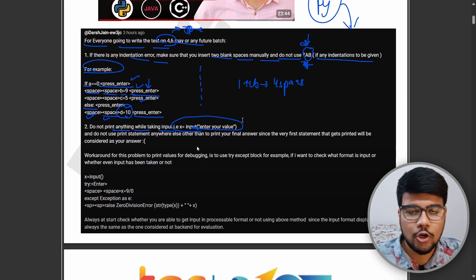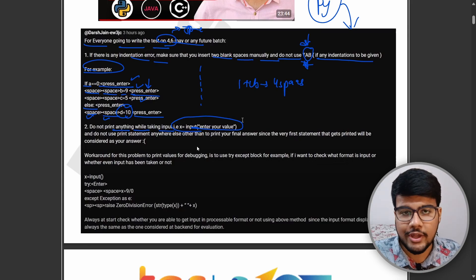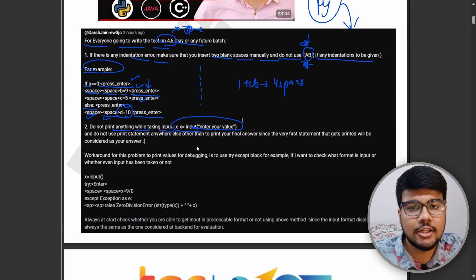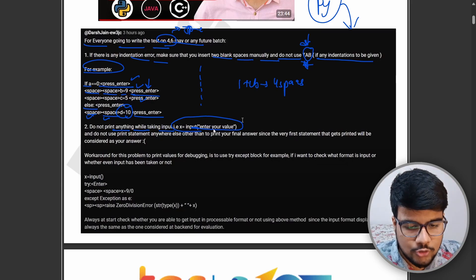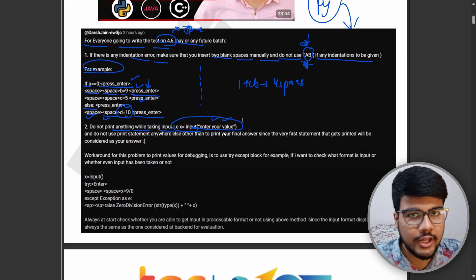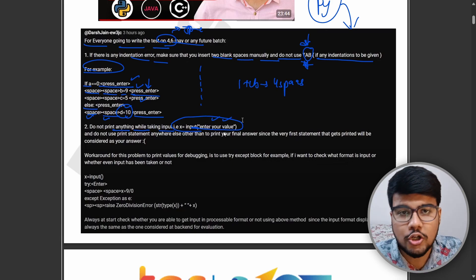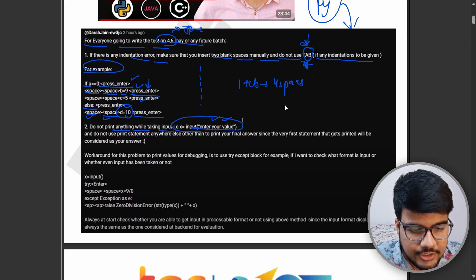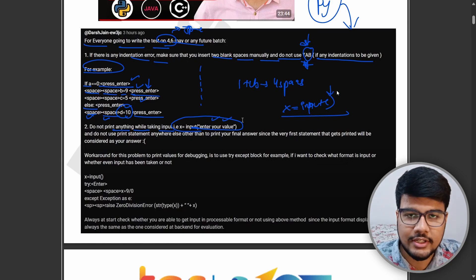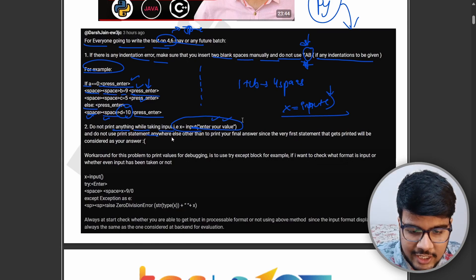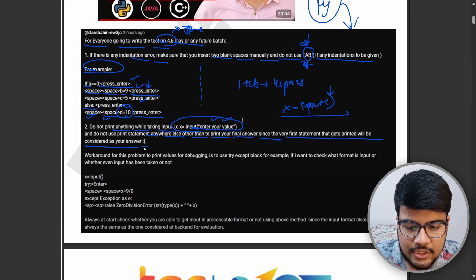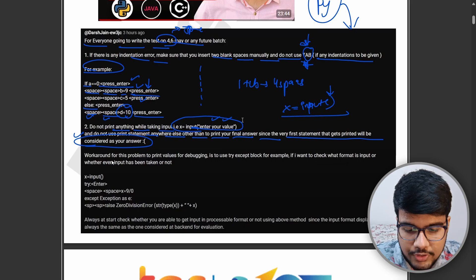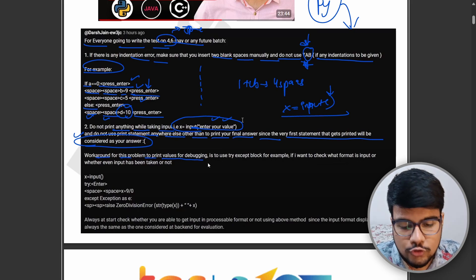Do not print anything while taking input. This is a very bad habit that I can also observe in their mock session. People write 'Enter your value' which is not at all acceptable in the compiler. Just write 'x = input()'. You don't need to write anything between that such as comments. Do not print statements anywhere other than printing your final answer, since the first statement that gets printed will be considered as the answer.